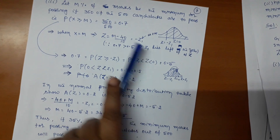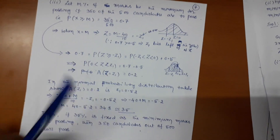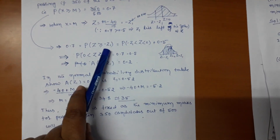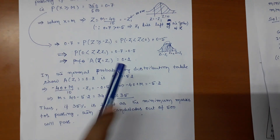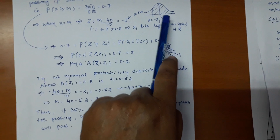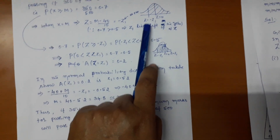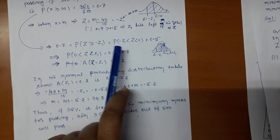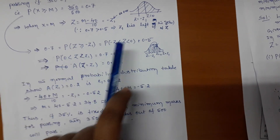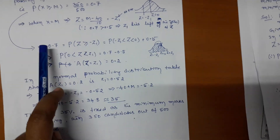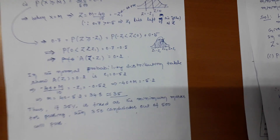So P(X ≥ m) = P(Z ≥ −z₁) = 0.7. This can be written as 0.5 + P(−z₁ < Z < 0), which equals 0.5 + P(0 < Z < z₁) by symmetry. Therefore P(0 < Z < z₁) = 0.7 − 0.5 = 0.2. This is the area corresponding to Z = z₁.